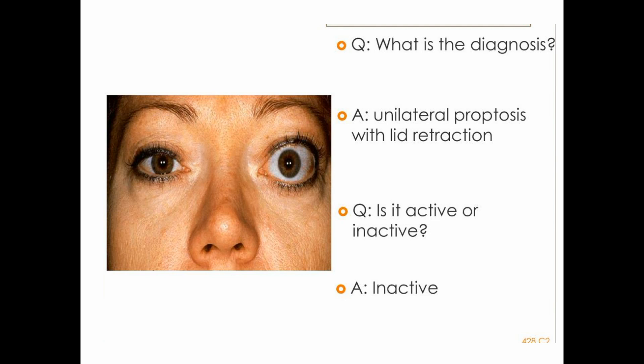Local causes of proptosis include capillary hemangioma, orbital cellulitis, optic nerve tumors such as optic nerve glioma and optic nerve meningioma, and retrobulbar hematoma. How will you manage? Management of proptosis depends upon its cause. If it is due to thyroid eye disease, we try to normalize thyroxine levels in the blood; otherwise we manage according to the underlying cause.